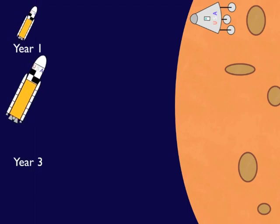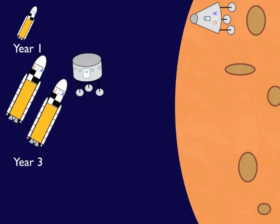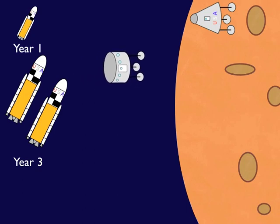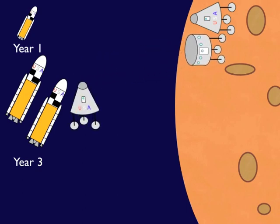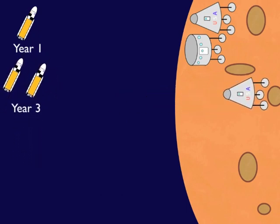The first one is going to carry an astronaut crew and a HAB, and that's going to land next to the first Earth return vehicle. The second Ares is going to bring a second Earth return vehicle and put it in another site.